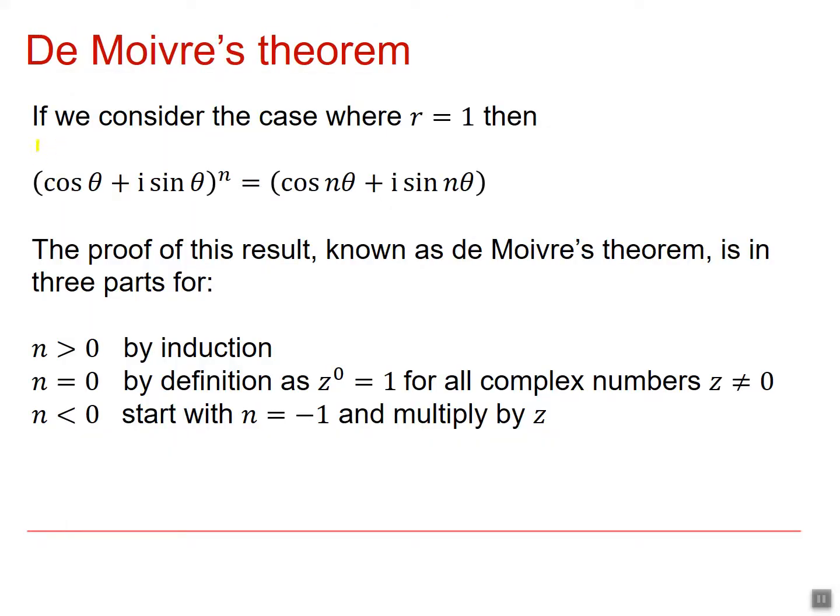As we've just seen on the dynamic plot, if we consider the case where r equals 1, then cos θ plus i sine θ to the power n becomes cos nθ plus i sine nθ. The modulus starts out at 1 and therefore remains as 1. We're going to use this result in quite a few ways, but not least to look at cos and sine of multiple angles.